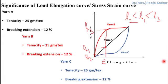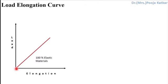Before we directly start studying the load-elongation curve or stress-strain curve of textile materials, let us study the basic types of materials and the nature of the load-elongation curve. For 100% elastic materials, the load-elongation curve is a diagonal straight line.